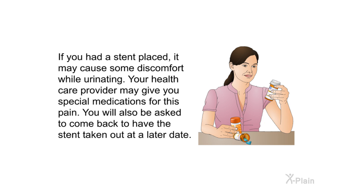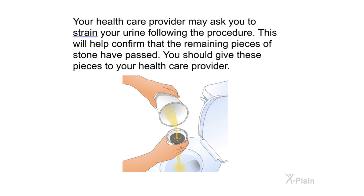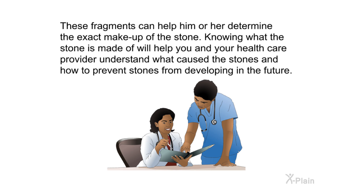If you had a stent placed, it may cause some discomfort while urinating. Your health care provider may give you special medications for this pain and will ask you to return to have the stent removed at a later date. Your health care provider may also ask you to strain your urine following the procedure. This will help confirm that the remaining pieces of stone have passed. You should give these pieces to your health care provider.